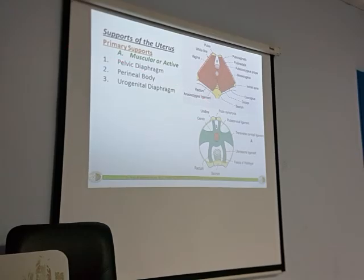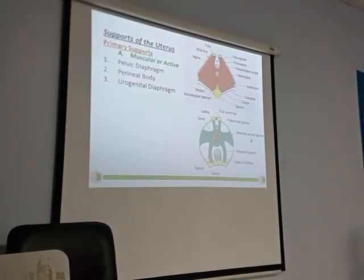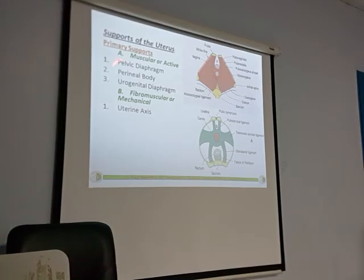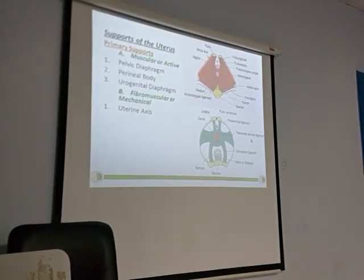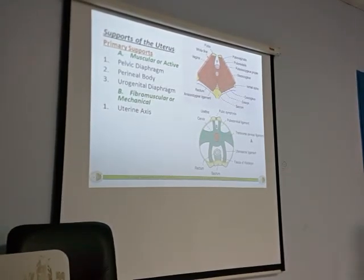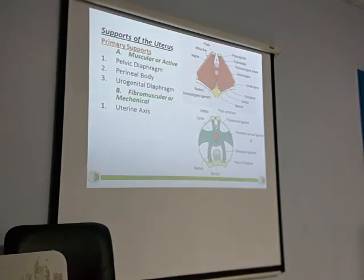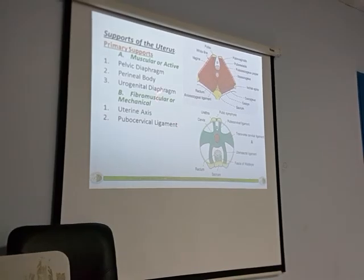The third primary support is the urogenital diaphragm — there is also a urogenital diaphragm below the bladder as well as the genital area. Coming to the other type: in the primary supports there are two types — muscular as well as fibromuscular. The fibromuscular supports include: first, the uterine axis — as I said, anteverion and anteflexion is a very important position, so if it is in the normal position, that itself acts as a support. The second fibromuscular support is the pubocervical ligament.